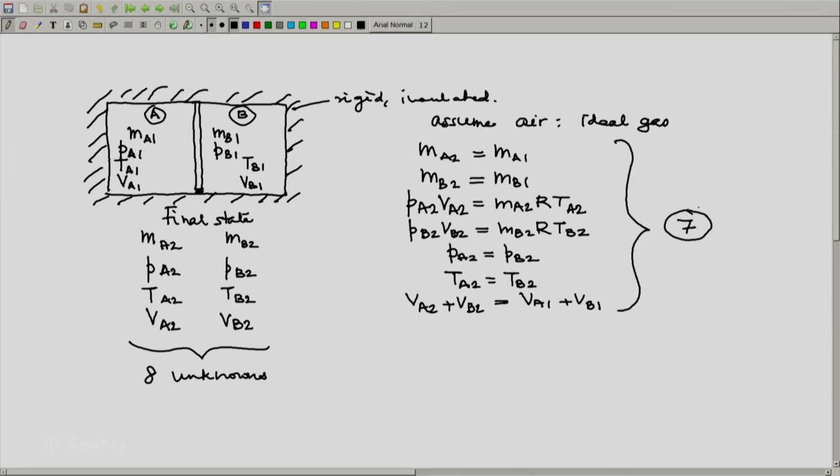We need one more. And that will be the first law of thermodynamics. The first law of thermodynamics would be Q equals delta E plus W.